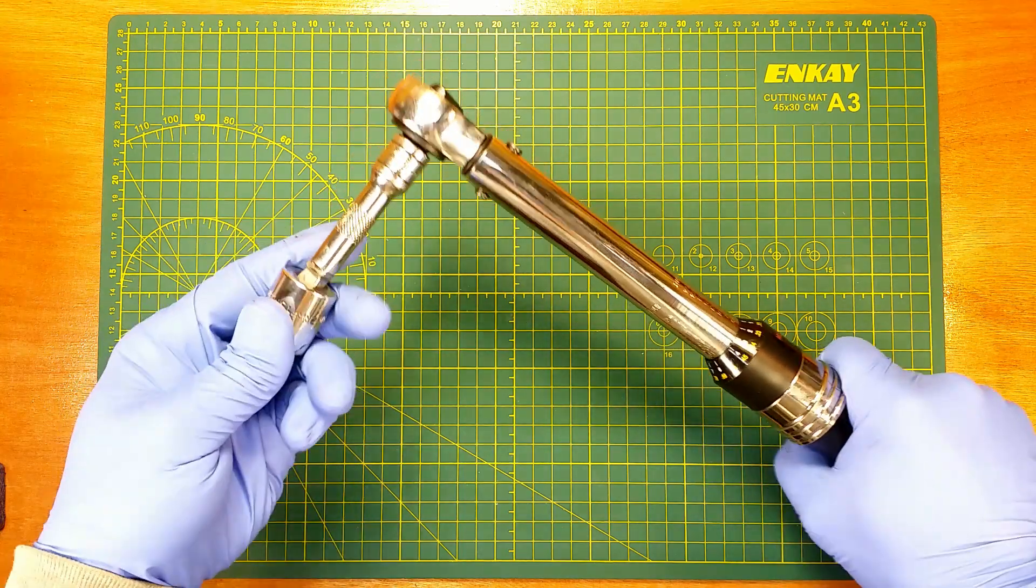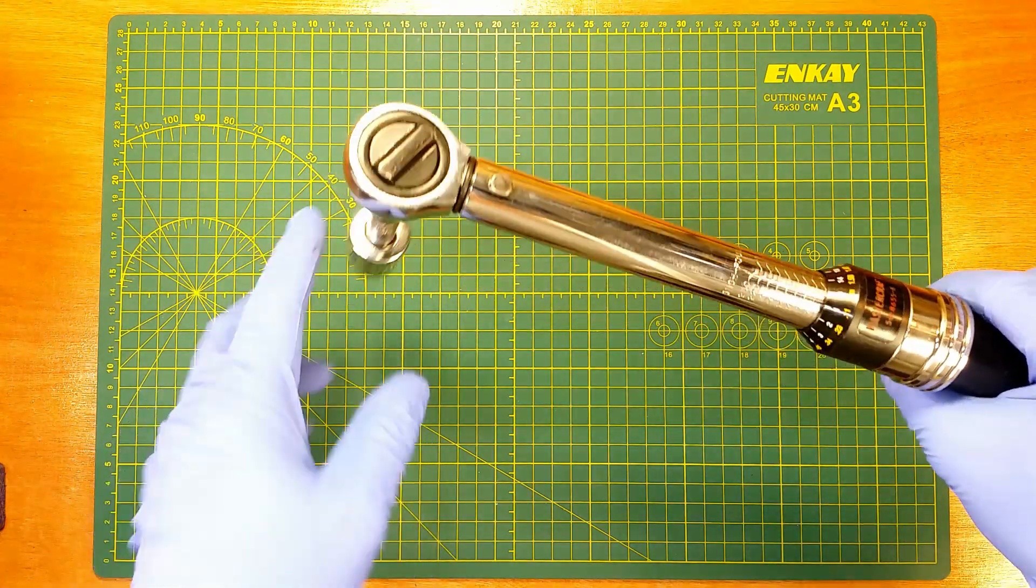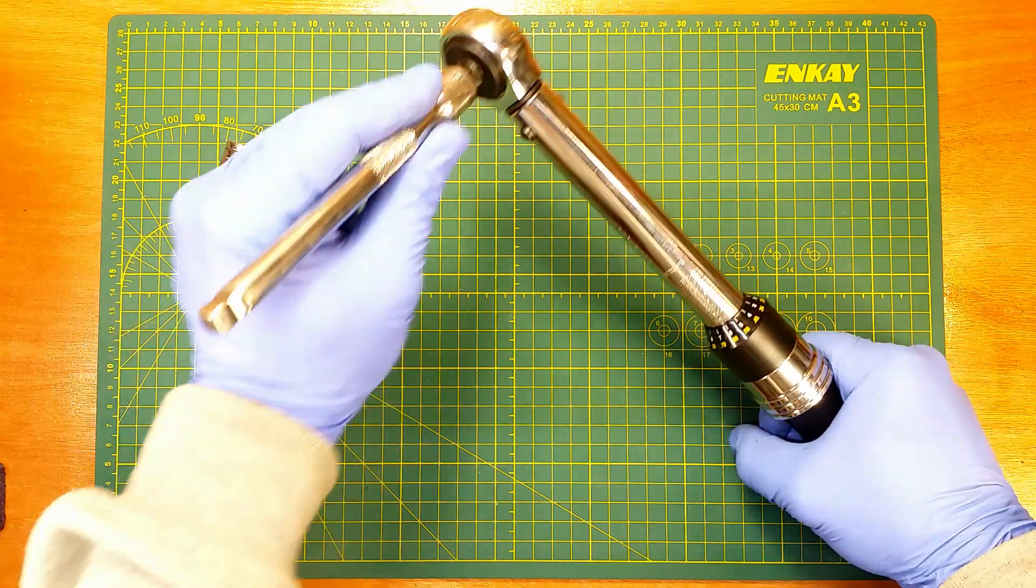By the way, when we use extension on the wrench along the axis of rotation, then we don't change the torque value.